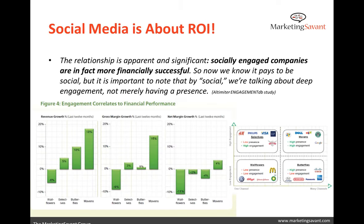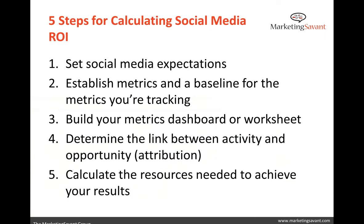Altimeter and WetPaint did a study a couple years back and found that organizations that were social mavens — high presence, high engagement — did in fact have positive revenue growth they could correlate back to that social presence. And those that didn't have great social presence didn't have the same growth pattern. We know that correlation does equal causation in social media. Just a couple quick bites before we go into the actual specific components and the five areas we look at when calculating ROI.